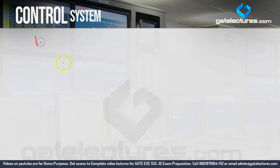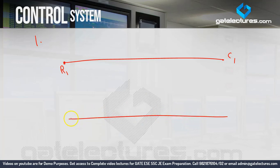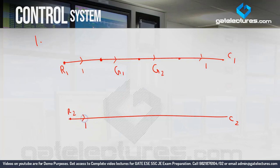The first numerical depends upon a multiple input and multiple output system. There are two inputs R1 and R2 and two outputs C1 and C2. The gain is 1 here, then there is another node with gain G1, then another node with gain G2, and then gain 1. Similarly, on the lower side, the gain is 1, then gain G3, then another node with gain G4, then gain 1.